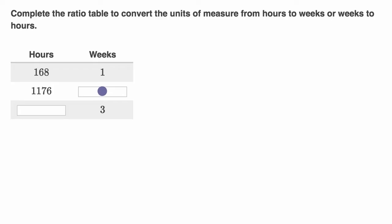Pause this video and see if you can figure it out. Well, to go from 168 to 1,176, what do we have to multiply by? That looks like we might be multiplying by seven. Let me try that out. So 168 times seven is equal to, eight times seven is 56, six times seven is 42 plus five is 47, and then one times seven plus four is indeed 1176. So we multiplied by seven.